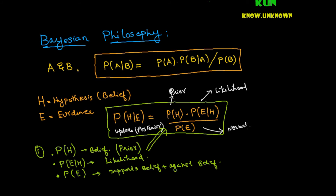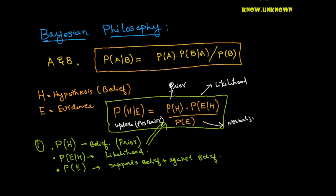Now let's take a more practical real-life example, one we normally see in communication systems or generally with any system that has inputs and outputs, and try to relate the Bayesian philosophy with that.